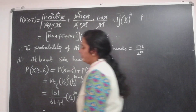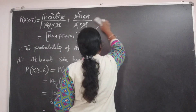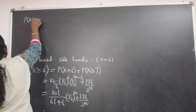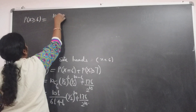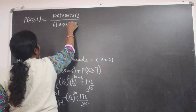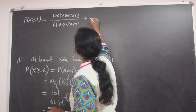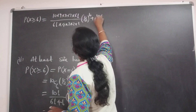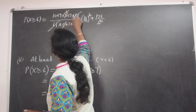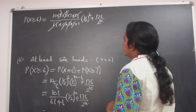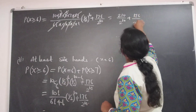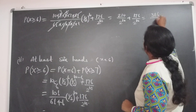10C6 = 10! / (6! × 4!) = 10×9×8×7×6! / (6! × 4×3×2×1). The 6! cancels. That gives 210. So P(X ≥ 6) = 210 × (1/2)^10 + 176/2^10 = 210/2^10 + 176/2^10 = 386/2^10.